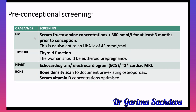However, in thalassemia, HbA1c is not an effective screening modality for diabetes, because HbA1c tests a type of hemoglobin with higher affinity for glucose, and in thalassemia the hemoglobin is defective. Therefore, in these patients you must perform fructosamine testing instead.